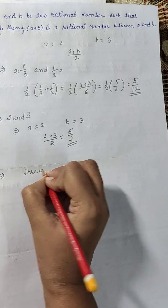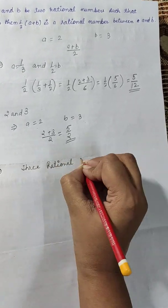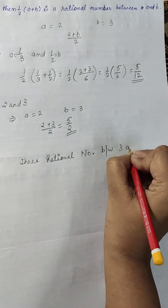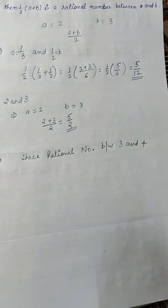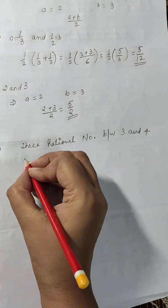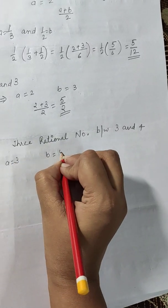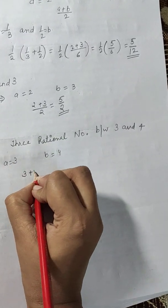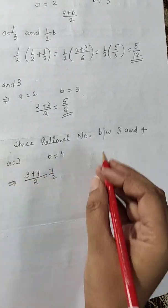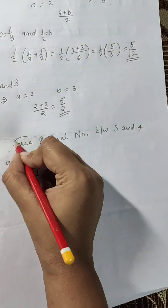The next example is: find three rational numbers between 3 and 4. Here a equals 3 and b equals 4. Applying the formula: (3 + 4) / 2 = 7/2. So 7/2 is one rational number between 3 and 4, but we need three.